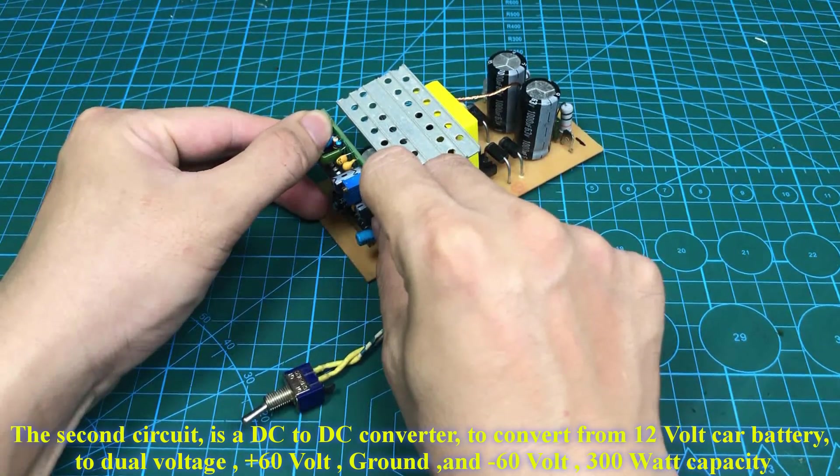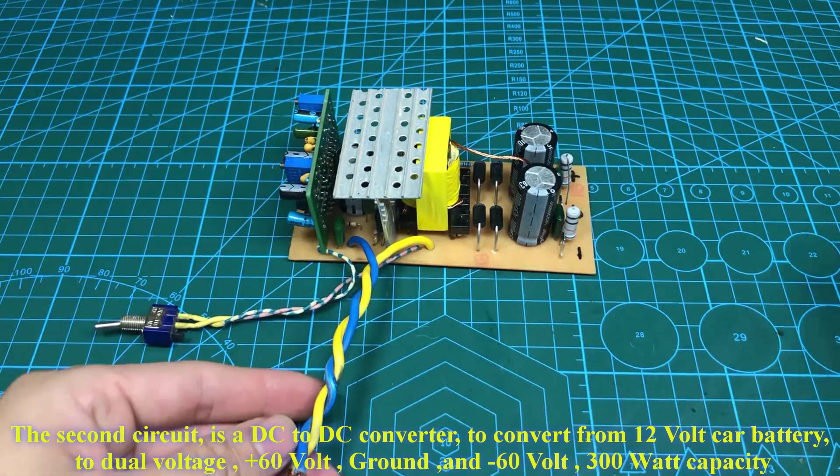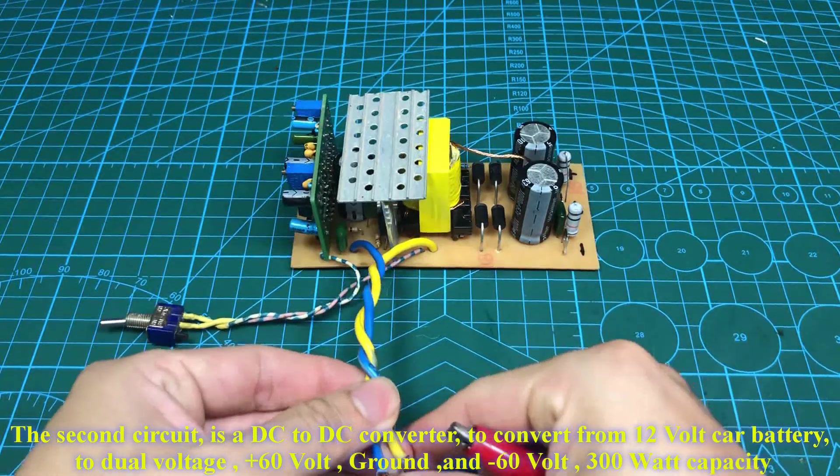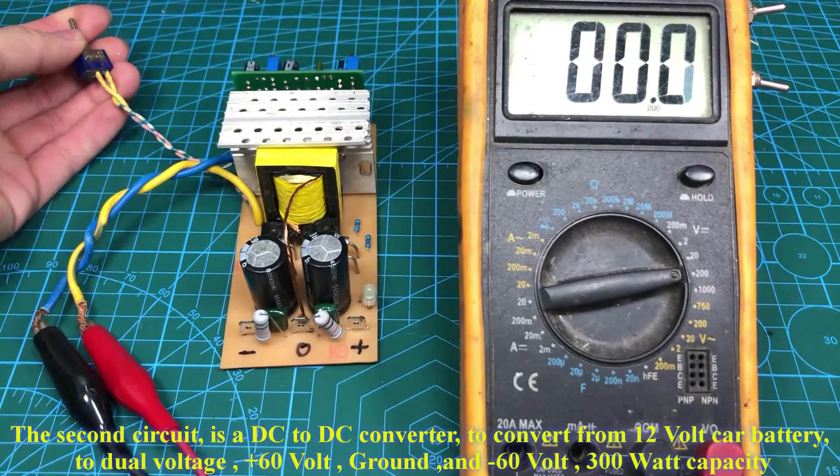The second circuit is a DC to DC converter to convert from 12 volt car battery to dual voltage, plus 60 volts, ground, and minus 60 volts, 300 watt capacity.